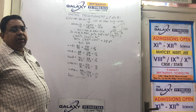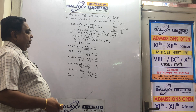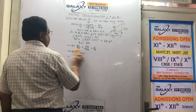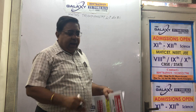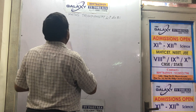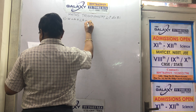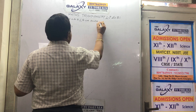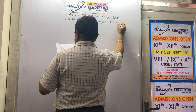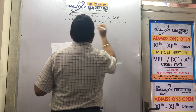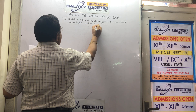We will look at sum number 6 of Exercise 8.1. The question is: if angle A and angle B are acute angles such that cos A equals cos B, show that angle A equals angle B.